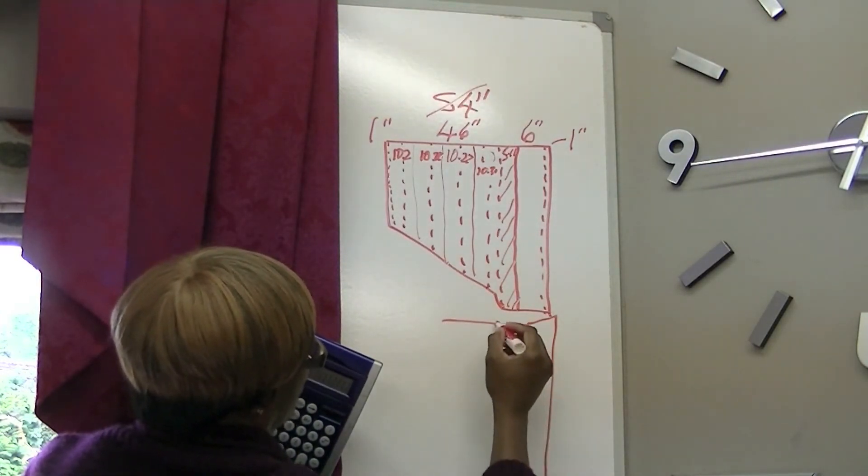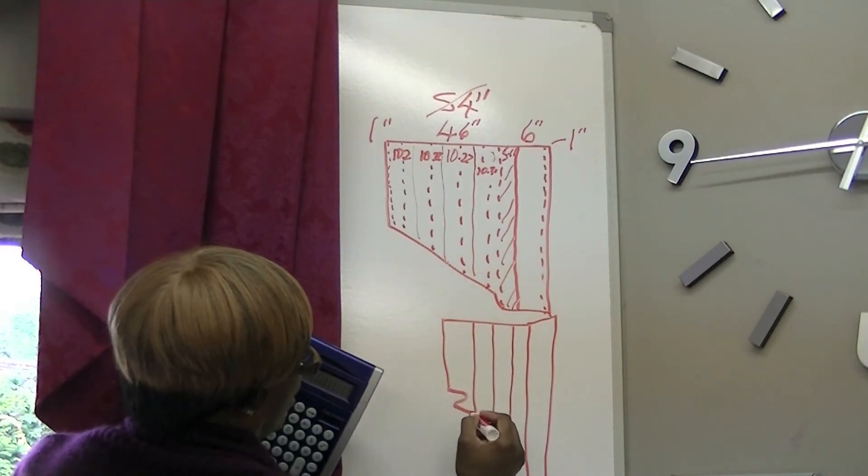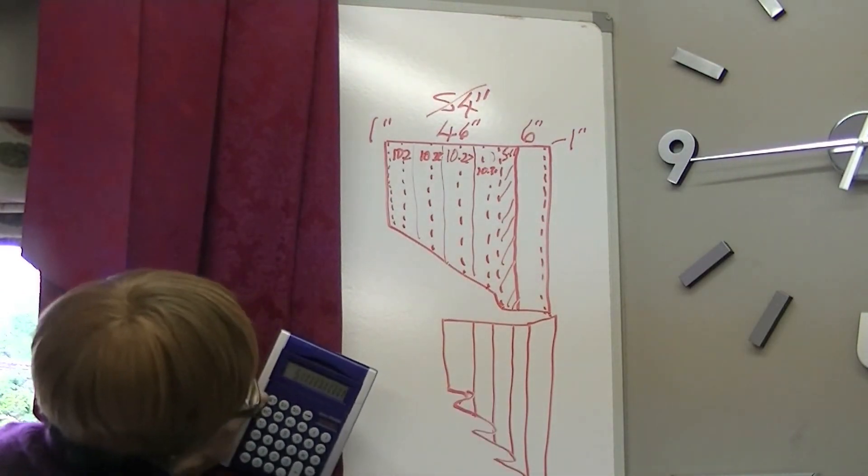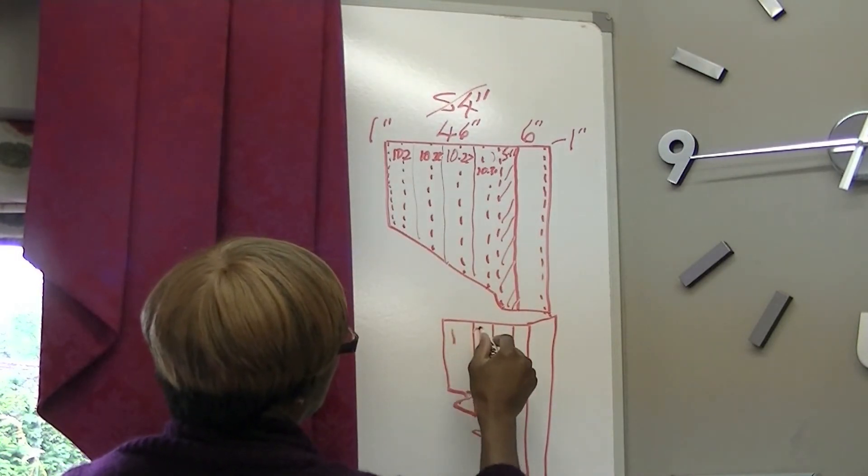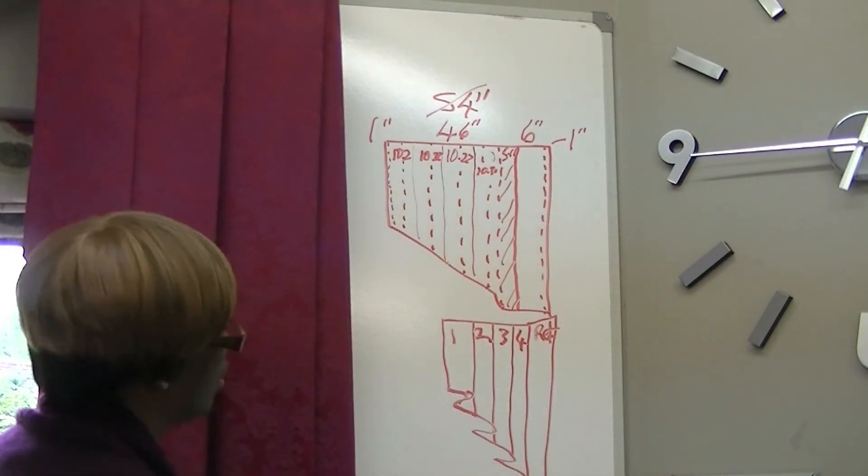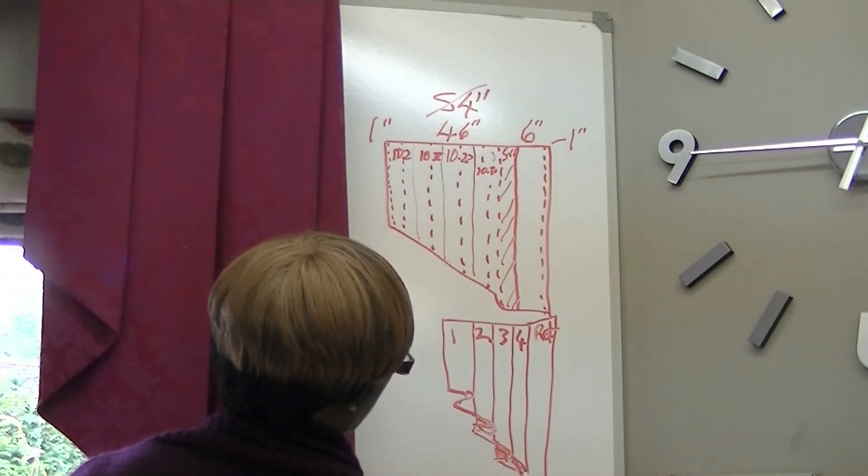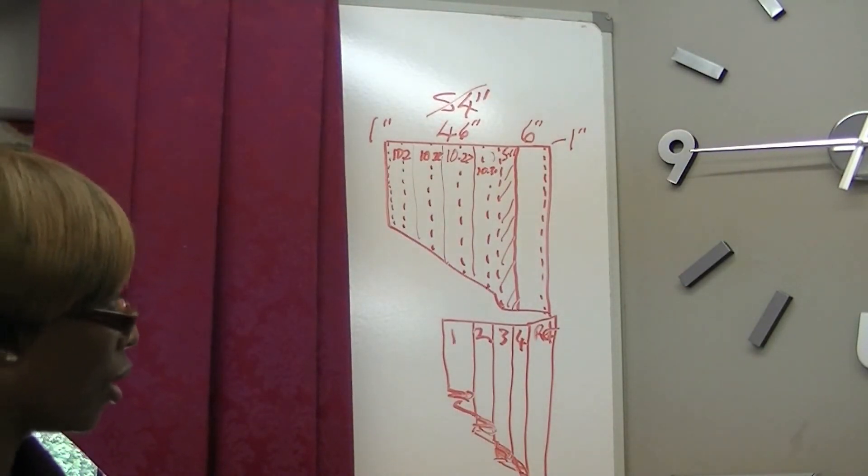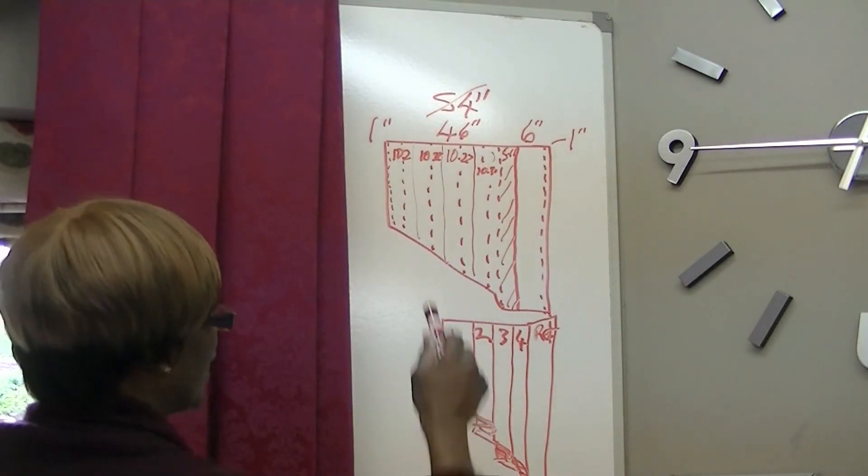It's folded back on itself. One, two, three, four folds, and then we've got the return here. Let's see if we can draw that properly. We have one, two, three, four folds, and that is the return. That's how you arrive at it.